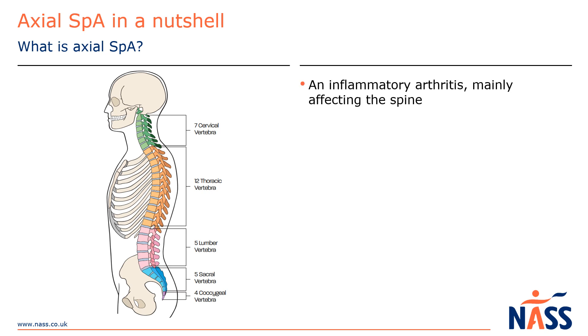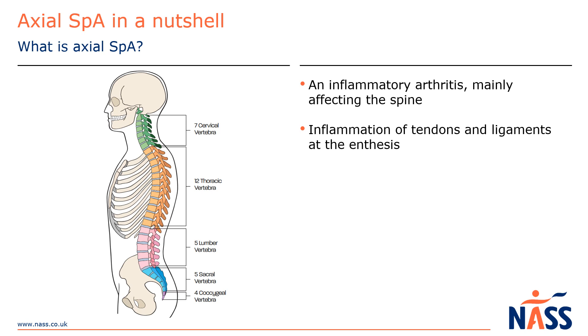Axial SpA is a type of inflammatory arthritis mainly affecting the spine. The area where a muscle attaches to a joint is called the enthesis. In axial SpA, inflammation occurs here, and we call this enthesitis.